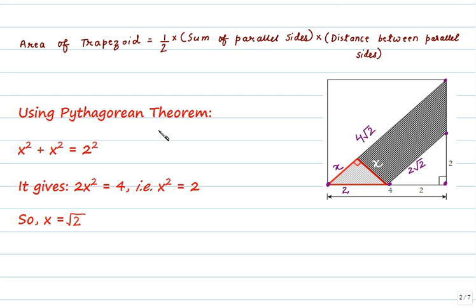So using the Pythagorean theorem here for this triangle, x² + x² = 2², it gives 2x² = 4 that is x² = 2 so x is equal to √2. So this x here is coming out as √2.